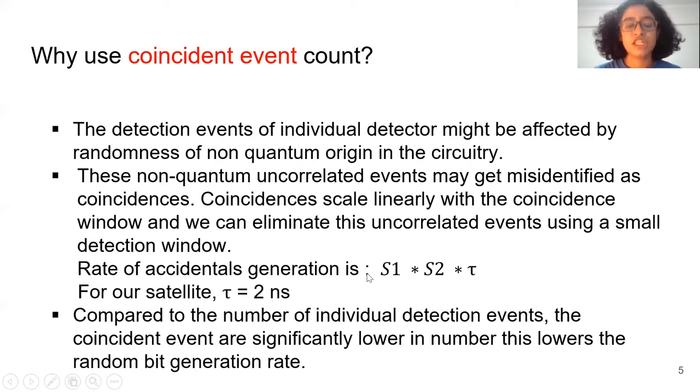The rate of accidental generation is S1 times S2 times tau, where tau is our coincidence window. If tau equals zero, we eliminate all accidental events. As the value of tau gets lower, we increase our chance of eliminating more accidentals. For our satellite, tau is 2 nanoseconds, but principally you can make it as small as you want. One downside of using coincident event counts is that they are significantly lower than individual detection events, which lowers the random bit generation rate.